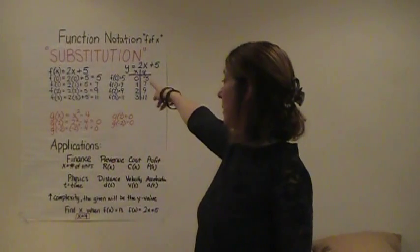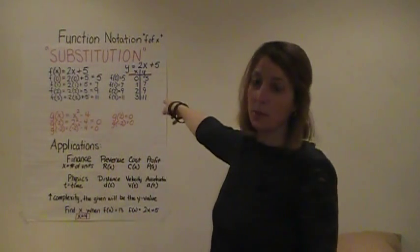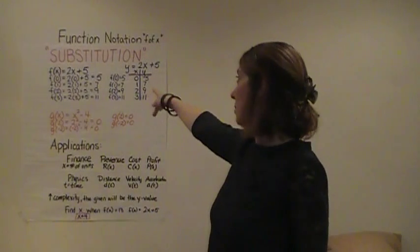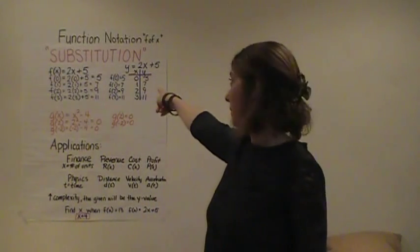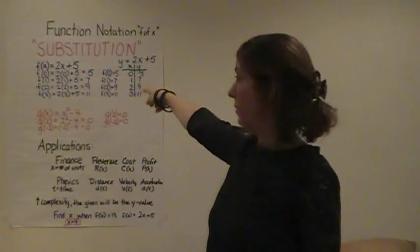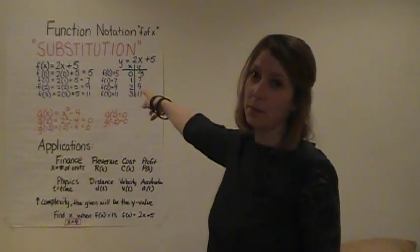Right next to it, what's written are the same points, the xy coordinate points, in function notation. So we write f(0) equals 5, f(1) equals 7, f(2) equals 9, and f(3) equals 11.